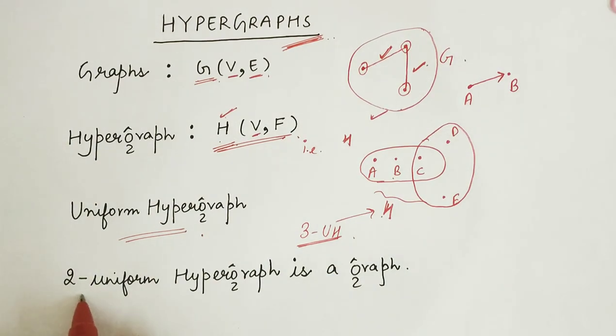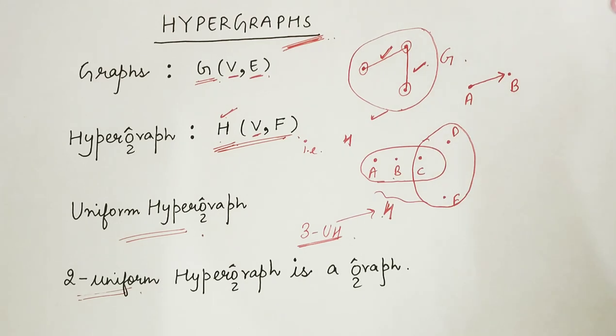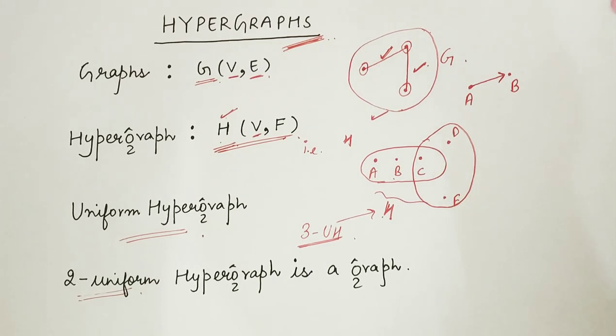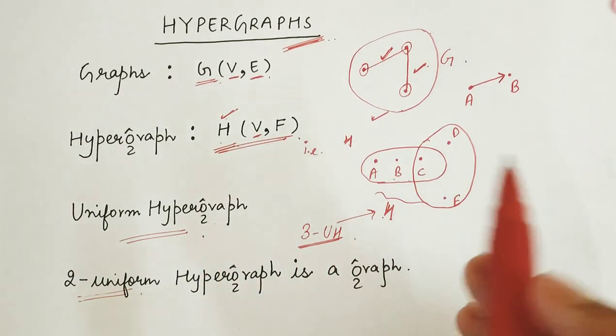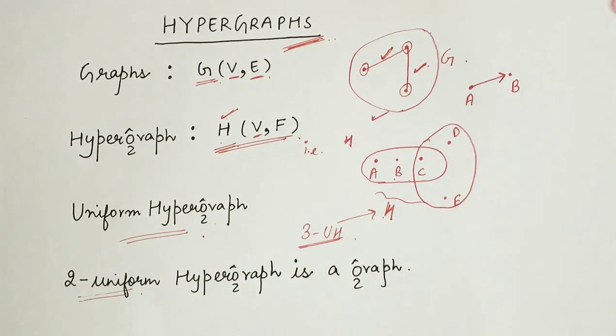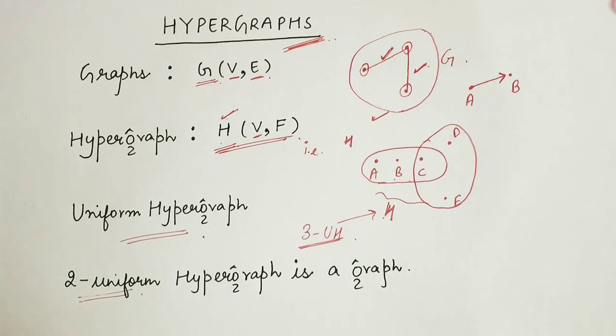Now, this is a theorem that a 2-uniform hypergraph is a graph. As we can see that if in a hypergraph all these hyperedges are of size 2, then it is equivalent to the edge set. And hence, it reduces to a graph.